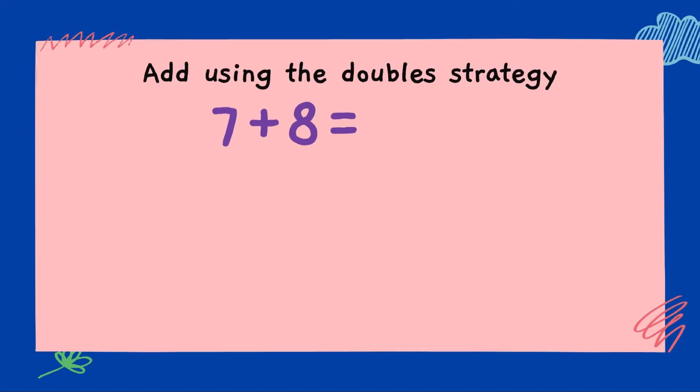Next one. 7 plus 8. What will we split the 8 into? Correct. 7 and 1. Double 7 is 14. 14 plus 1 gives you 15. 7 plus 8 is 15. Very good.